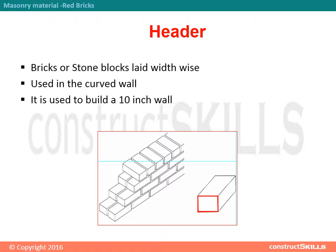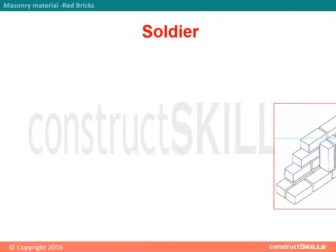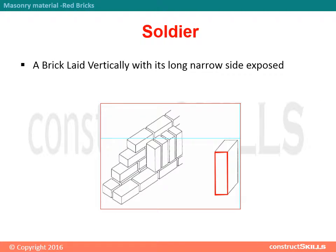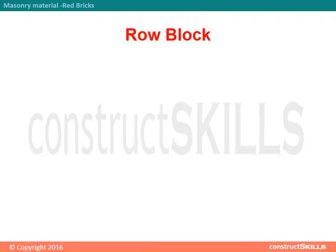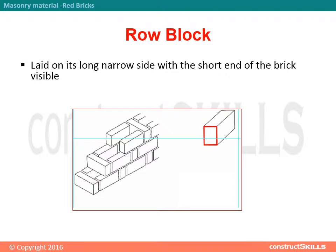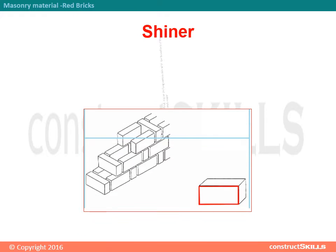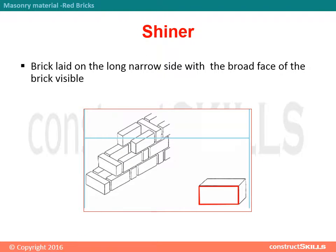Header is also used to build a 10-inch wall. Soldier: a brick laid vertically with its long narrow side exposed. Row: a block laid on its long narrow side with the short end of the brick visible. Shiner: a brick laid on the long narrow side with the broad face of the brick visible.